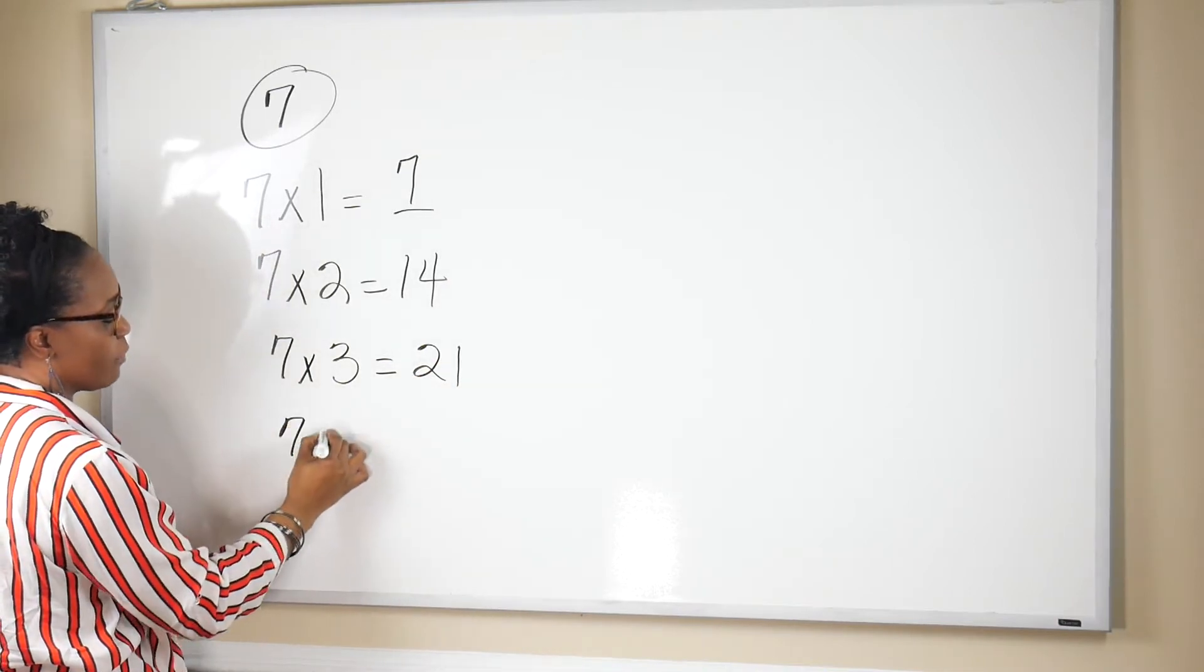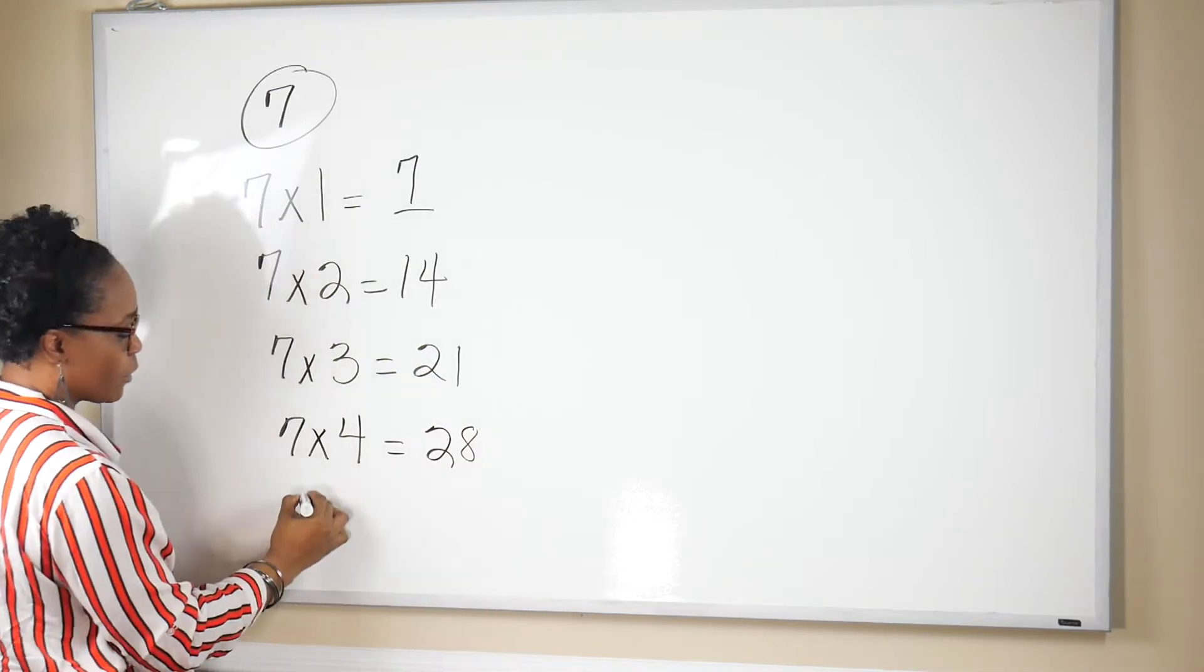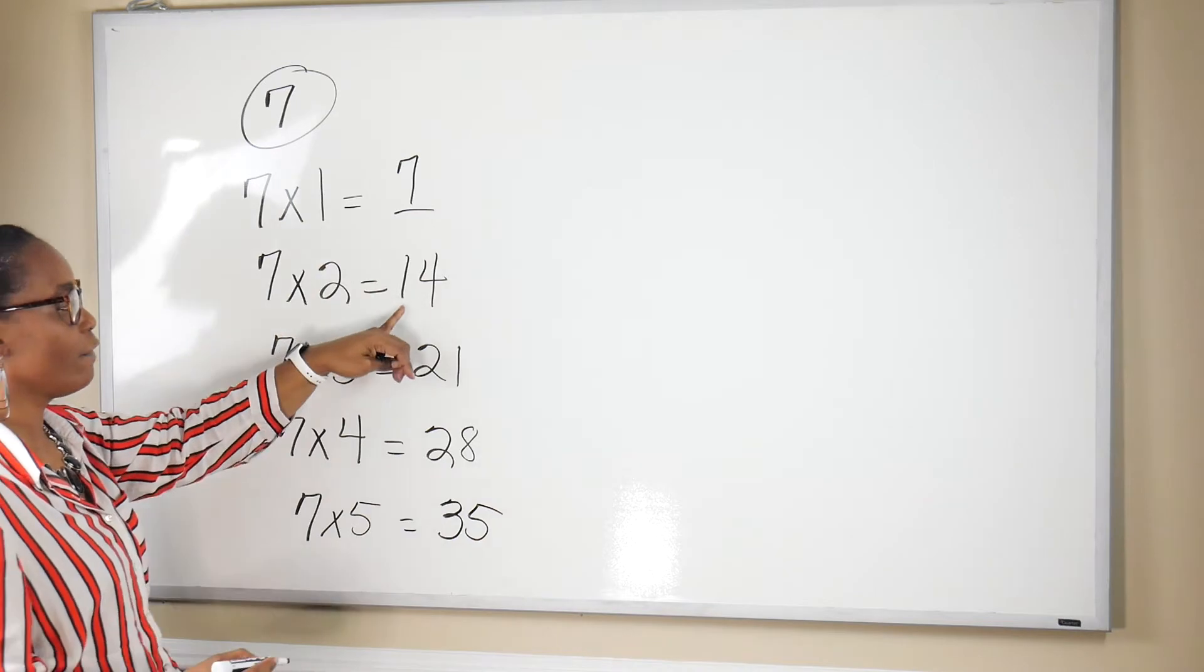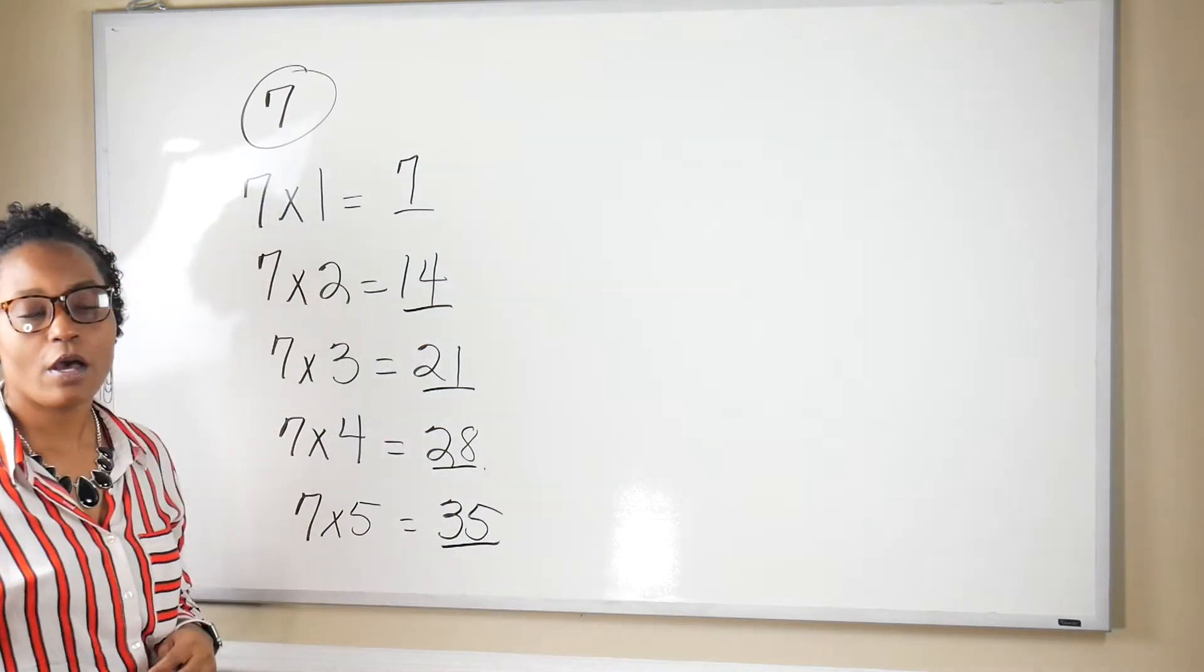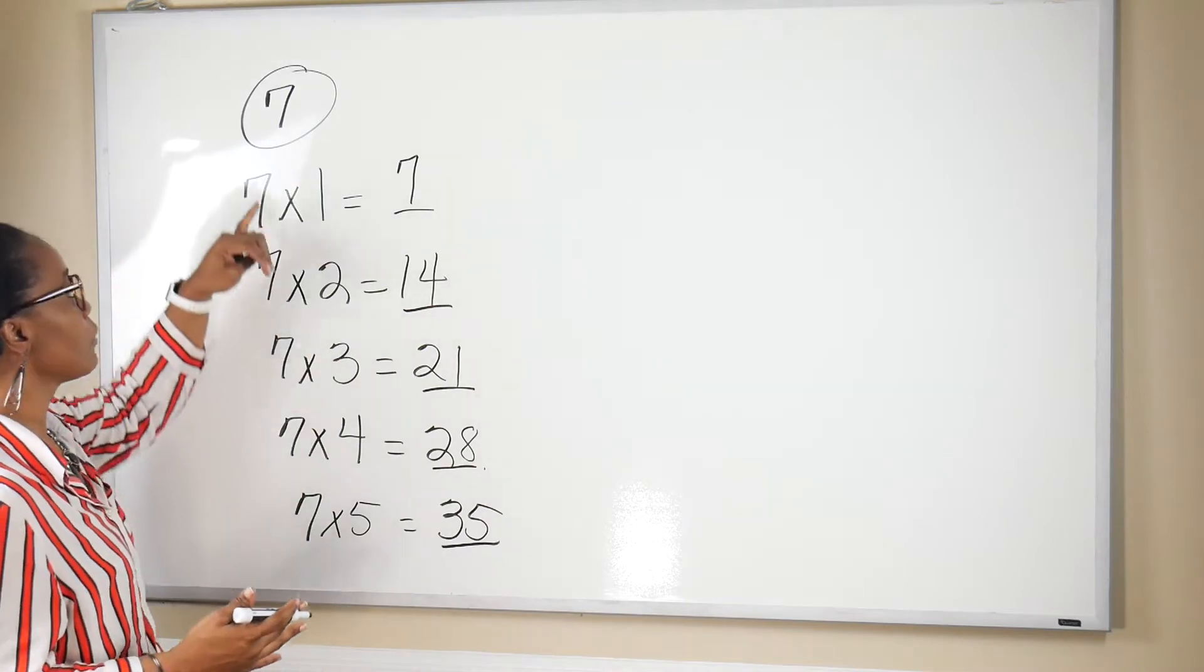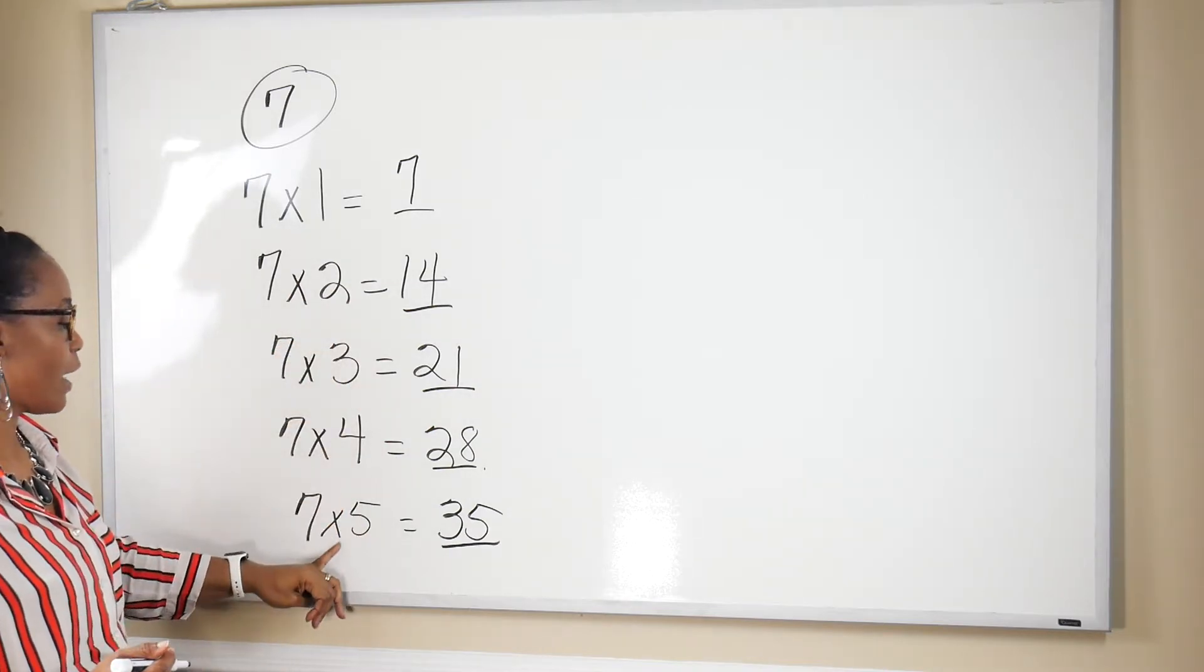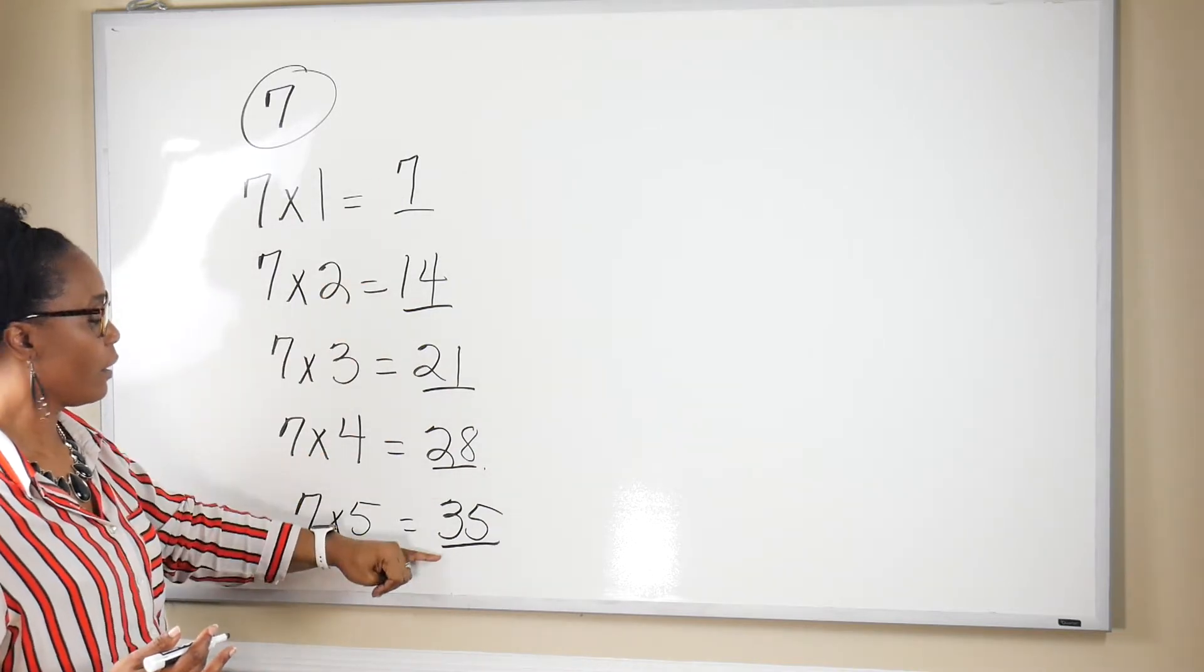If we multiply seven times four, we get 28. If we multiply seven times five, we get 35. So seven, 14, 21, 28, and 35 are the first five multiples when we multiply seven times one, two, three, four, and five. And then our products are the multiples.